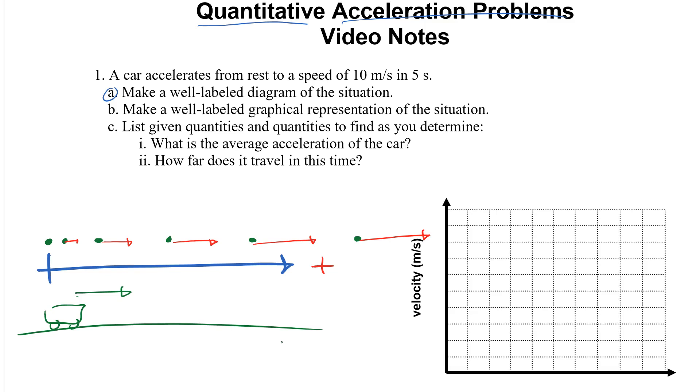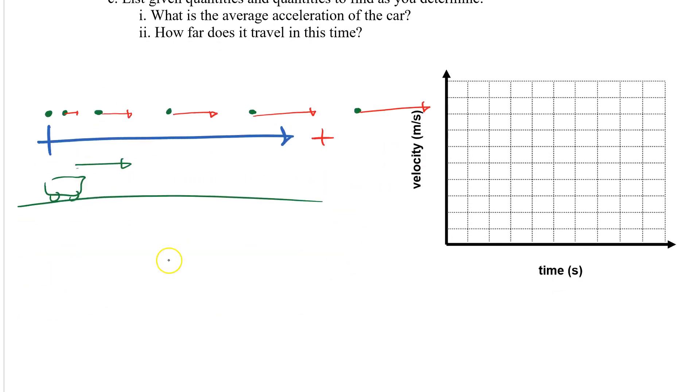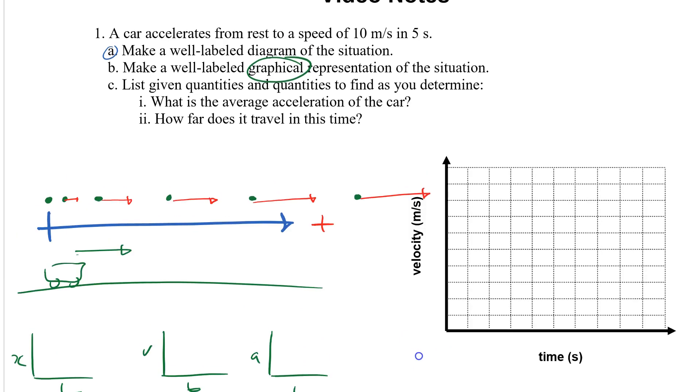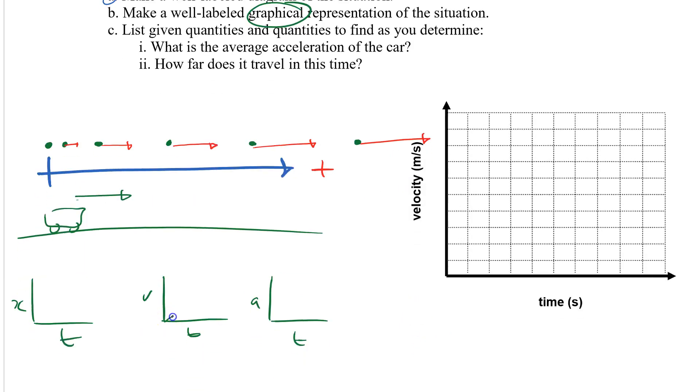Make a well labeled graphical representation of this situation. Now it's kind of half done for you in that there is a velocity time graph listed already. So we can make a velocity time graph. We could make a position time graph and we could actually even make an acceleration versus time graph. In this case it's starting from rest and it's going up so this is probably the way I would draw the velocity time graph as a sketch.